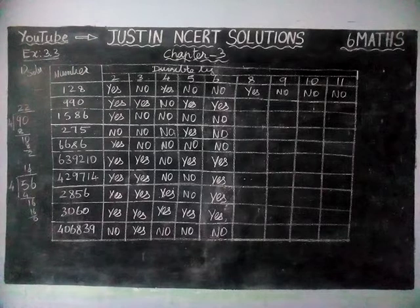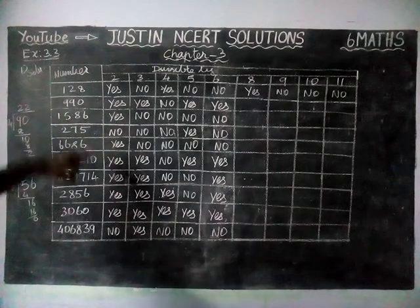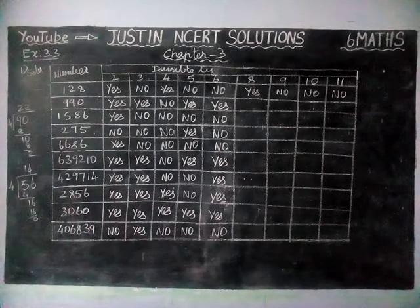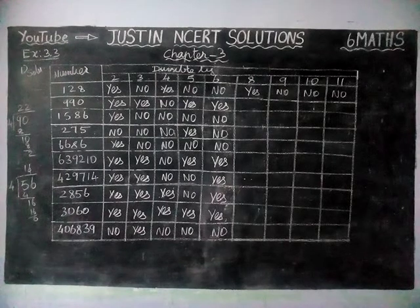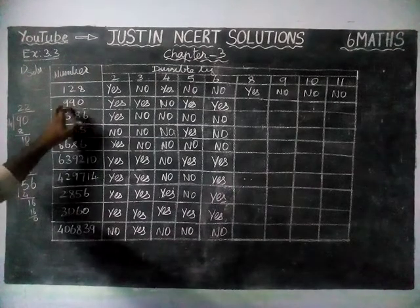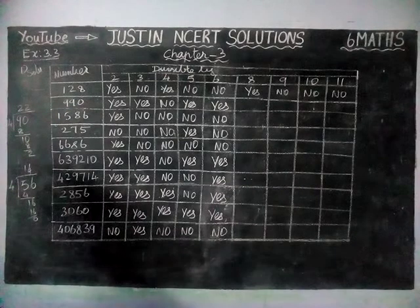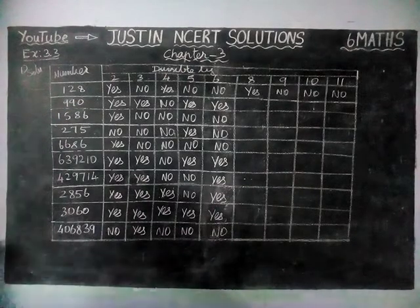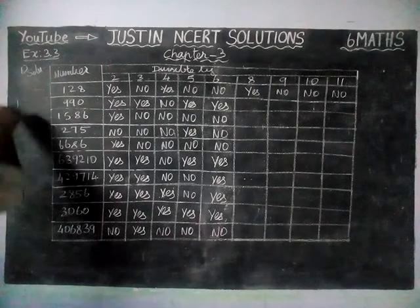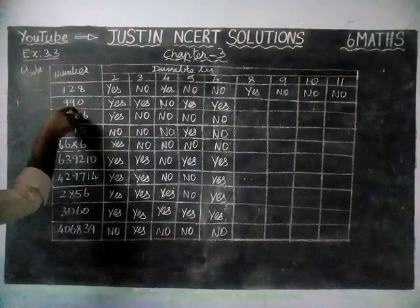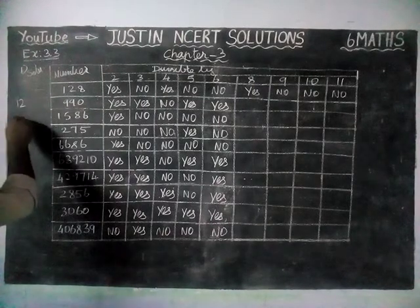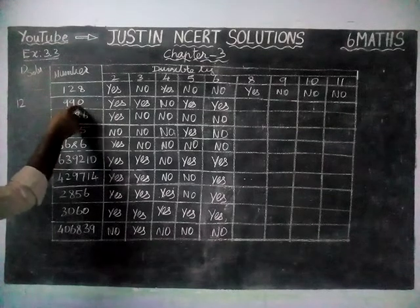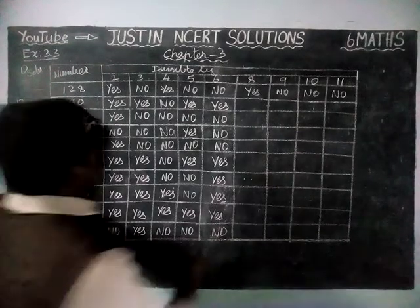Now, divisibility by 8. If the last 3 digits are divisible by 8, that number is divisible by 8. We will check it. For 990: last 3 digits — 990 — 1 eight is 8, remaining 1; 19 — 2 eights are 16, remaining 3; 30 — 30 is not divisible by 8, so no.